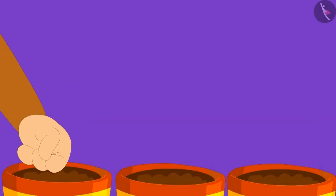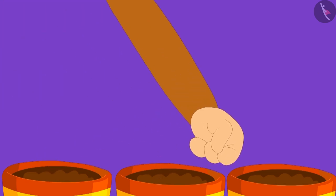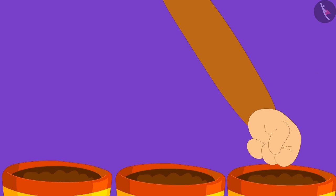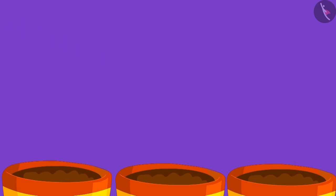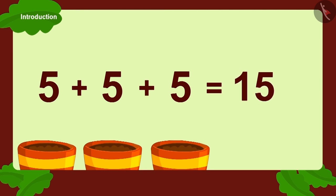Before leaving, the bird gave some seeds to Babban too. Babban planted five seeds each in three pots. Can you tell how many seeds did Babban plant in total? Five plus five plus five. Babban planted fifteen seeds in total.